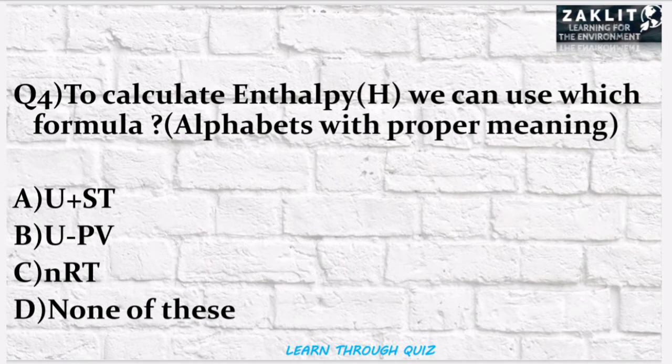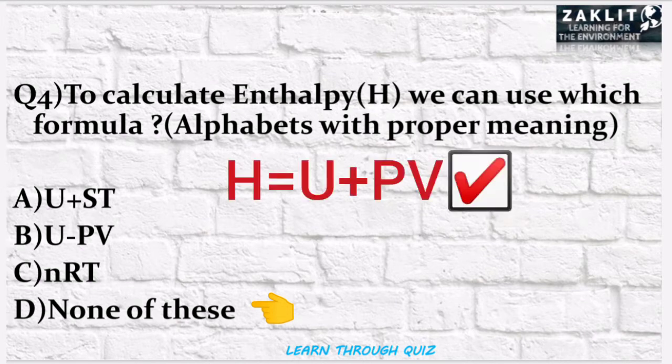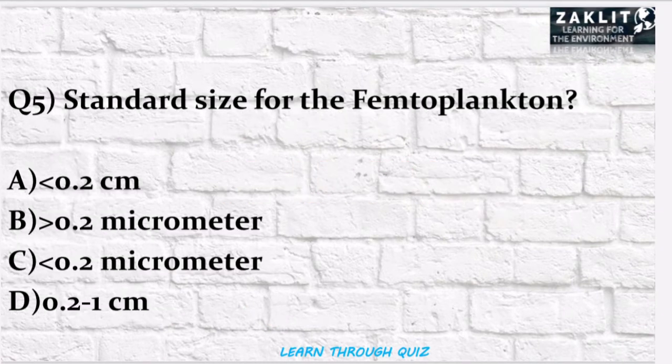The next question was: to calculate enthalpy, which of the following formulas can be used? The correct option is D — none of these — because the correct formula is H = U + PV, where U is the internal energy, P is pressure, and V is volume.